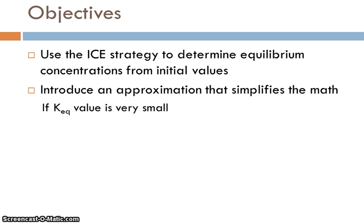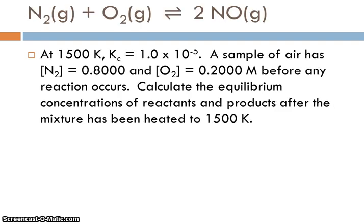Use the ICE strategy, initial change equilibrium tables, to find the equilibrium concentrations when we're given only initial values. But because the Keq in this problem is going to be very small, we're going to be able to introduce an approximation that will make our math a little easier. It will help us avoid the quadratic equation because that's very time consuming.